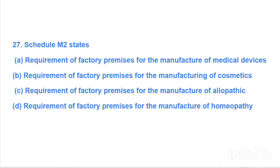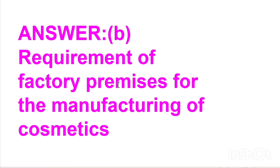Next question: Schedule M2 states — Option A: requirement of factory premises for manufacture of medical devices, Option B: requirement of factory premises for manufacturing of cosmetics, Option C: requirement of factory premises for manufacturing of allopathic drugs, Option D: requirement of factory premises for manufacturing of homeopathy. Answer is Option B, requirement of factory premises for the manufacturing of cosmetics.